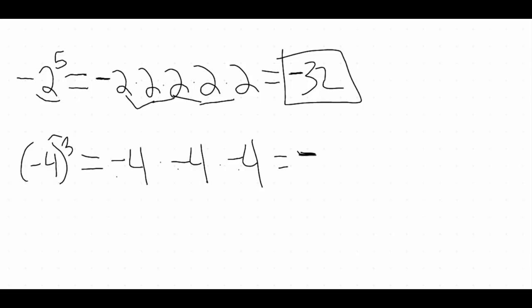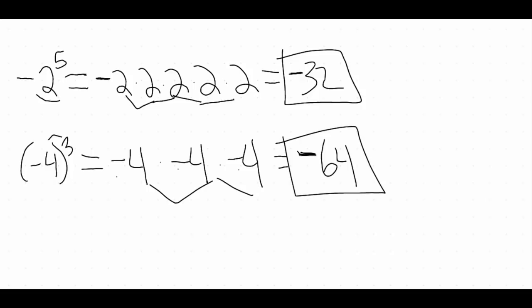A little trick here is to count up your negatives. If you have an odd number of negatives, your answer is going to be negative. If you have an even number of negatives, your answer is going to be positive. So because we have three negatives — that's an odd number — our answer will be negative. Four times four is sixteen, and sixteen times four is sixty-four. So here we get negative sixty-four as our answer.